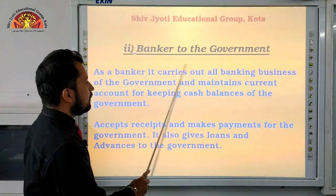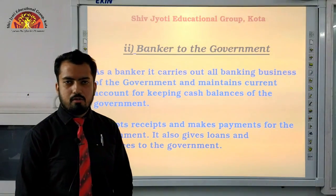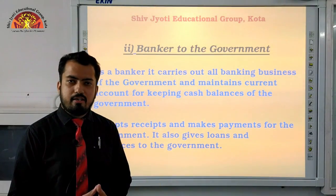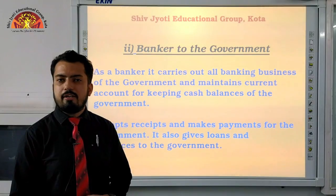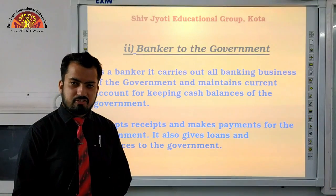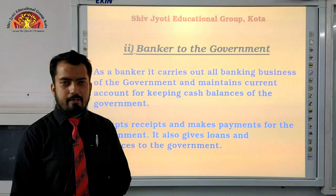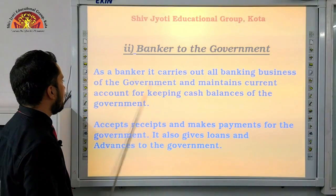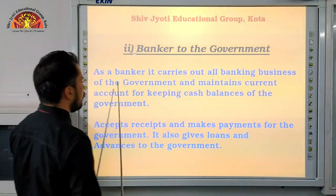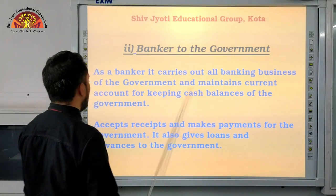Function number two is Banker to the Government. Every government needs a bank. The government's monetary savings are held in the central bank, and the central bank provides suggestions on all government transactions — when to transact and when not to. As a banker, it carries out all banking business of the government and maintains a current account for keeping the government's cash balances.